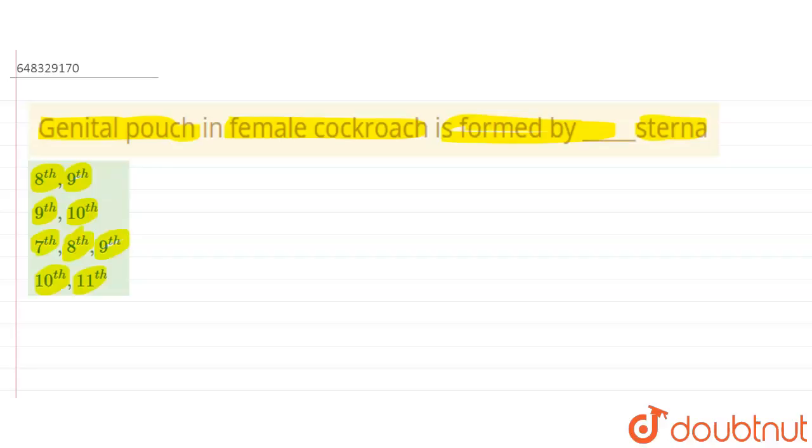So if we see here, we know that the abdomen of the male and the female cockroach - if we see in the cockroach, we will find that their abdomen has 10 segments.